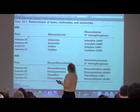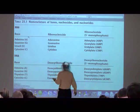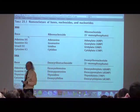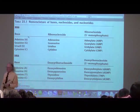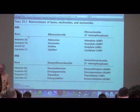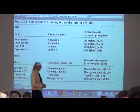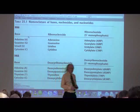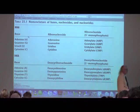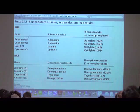Adenine pairs with thymine. If we take a base and connect it to a sugar, we create something called a nucleoside. A nucleoside is a base plus a sugar, or if you want to think about it, it is a nucleotide minus its phosphates. The names change: adenine becomes adenosine.